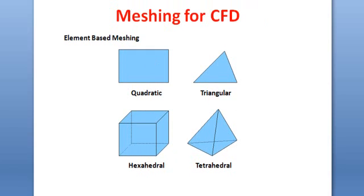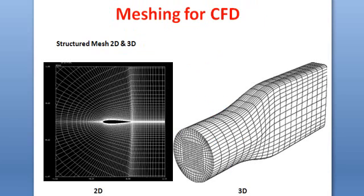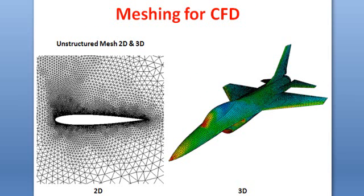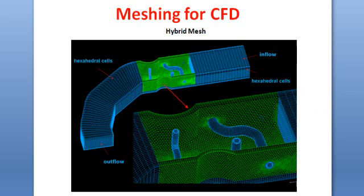These are the common mesh types used in simulation. In some cases we use structured elements, in others unstructured — it depends on the type of problem and the results we want. We also use hybrid mesh to increase efficiency and save simulation time. In the next tutorial we will see the ANSYS Mesh module and its different features. Thanks so much to our viewers.